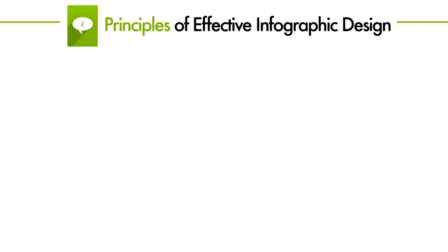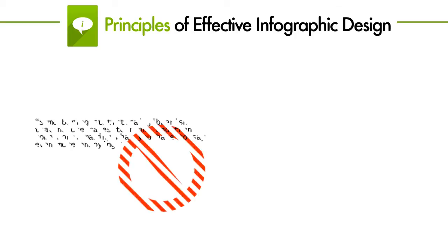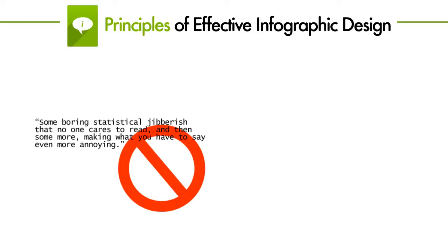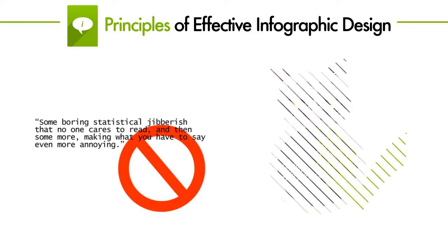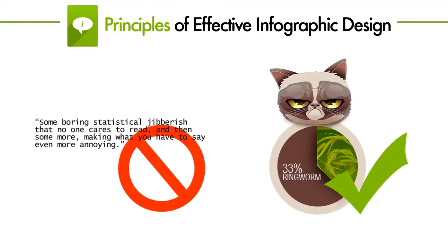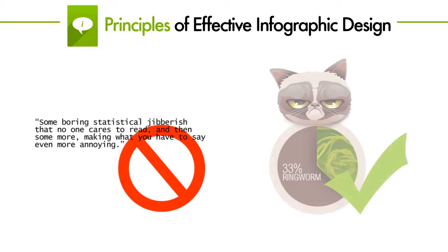In order for an infographic to be an infographic, you have to show the data, not tell it. That is, don't include too much type in your design. People don't like reading much, especially boring statistical information. So do your best to visually represent as much information as you possibly can.